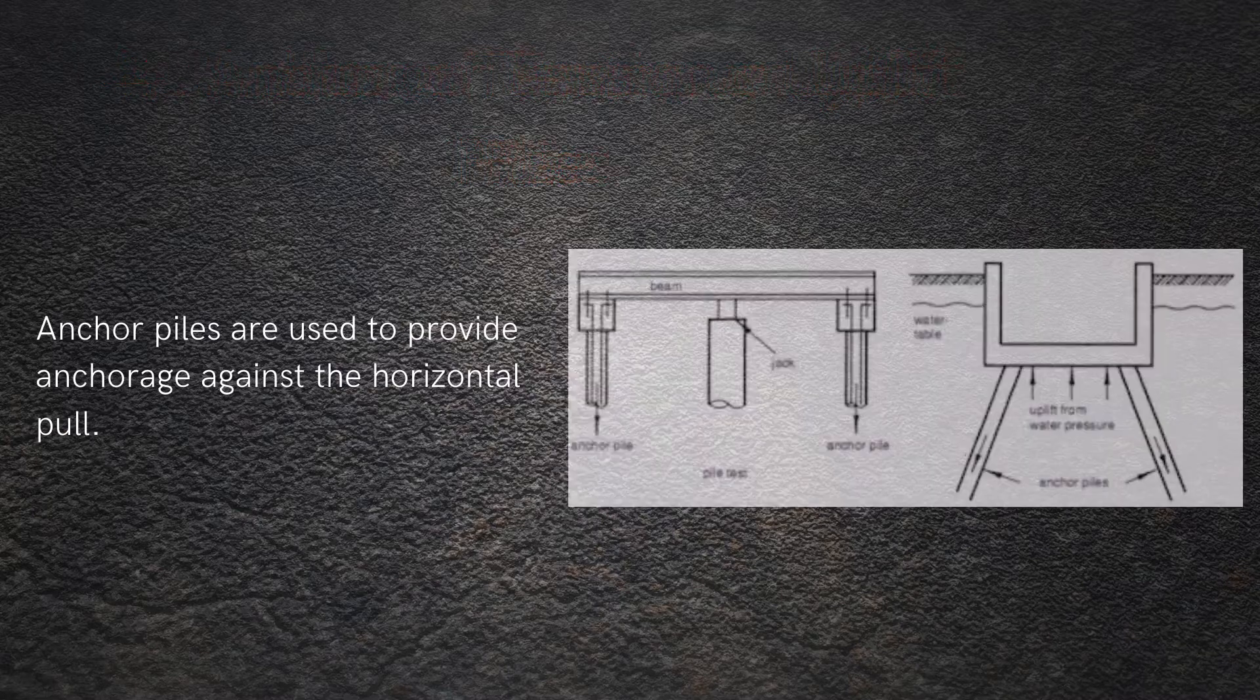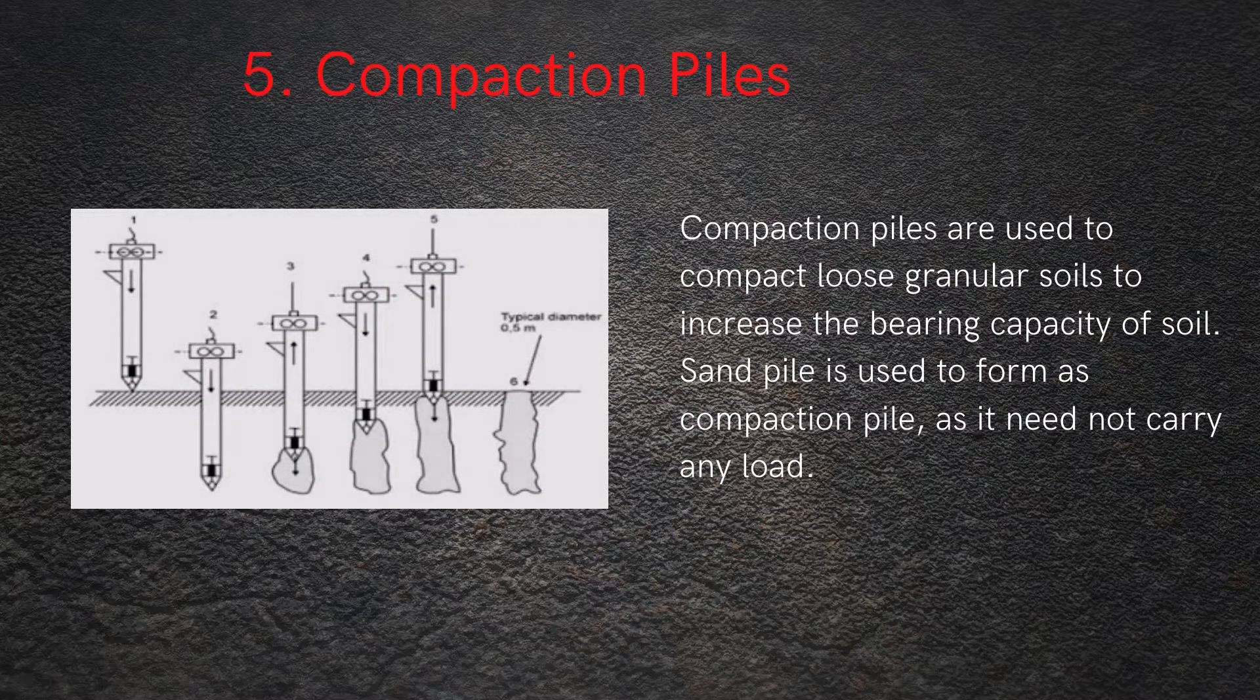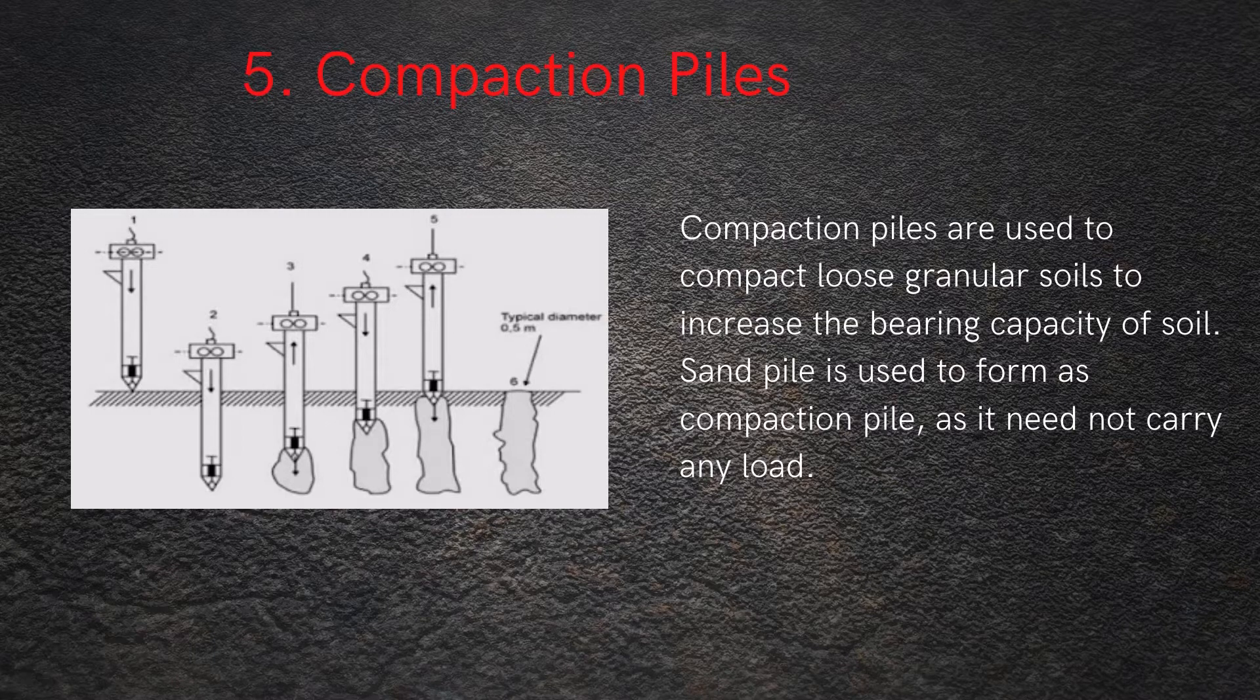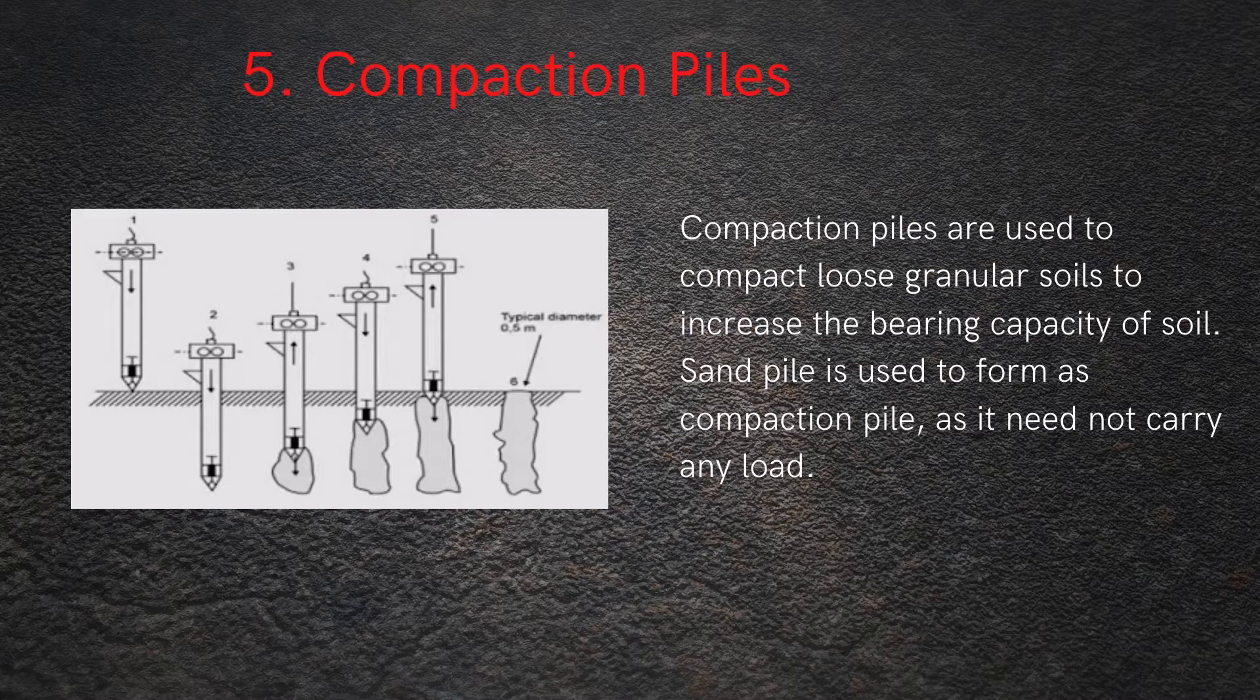Number five, compaction piles. Compaction piles are used to compact loose granular soils to increase the bearing capacity of the soil. Especially sand piles are used to form a compaction pile as they need not carry any load. This is a technique that is mainly used as a soil stabilization method.